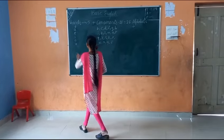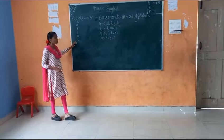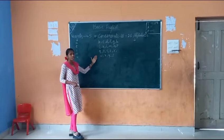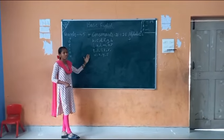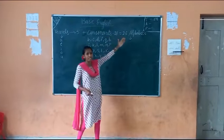As we know the vowels are A, E, I, O, and U — and the remaining 21 are the consonants. So total 26 letters are there.